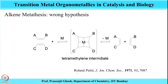The next mechanism was proposed by Roland Petit in JACS 1971, which spoke about the presence of a tetramethylene intermediate bound to the metal — four methylene groups at four corners — forming a tetramethylene metal-bound intermediate resulting in the desired metathesis product. However, this mechanism also lost support later because of lack of evidence and was hence proven to be not true.